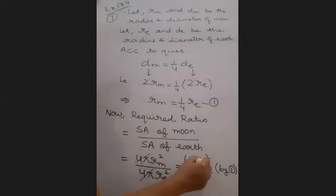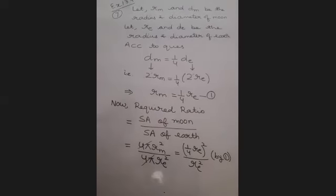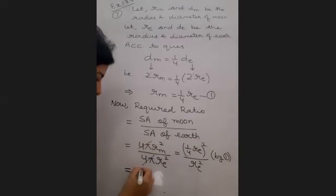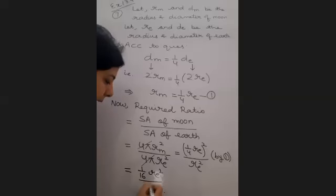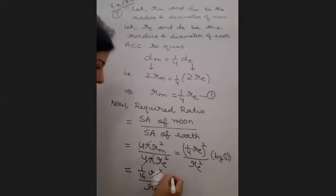re square and re square will get canceled. And what about 1 upon 4? 1 by 16. So this re square and re square cancel and the final ratio is 1 is to 16.